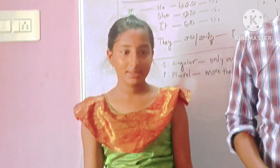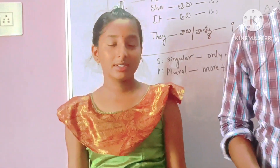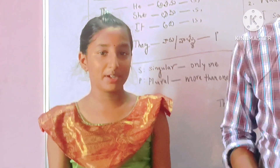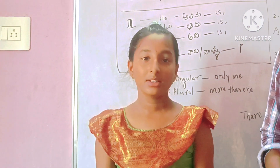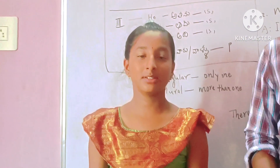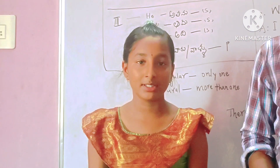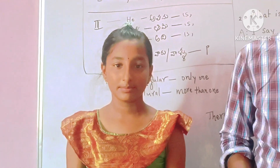How many persons are there in the English language? There are three persons in the English language. What are they? They are first person, second person, and third person.